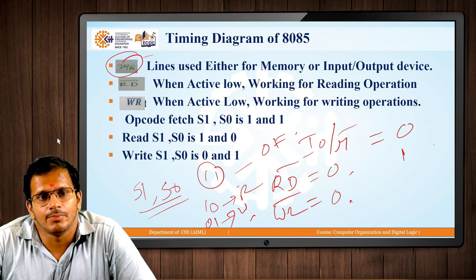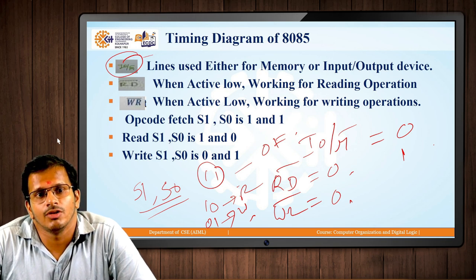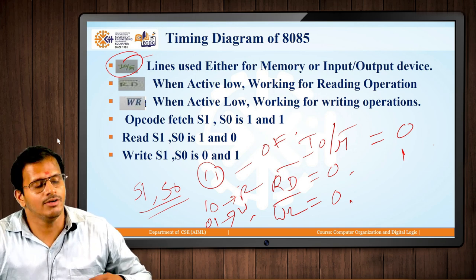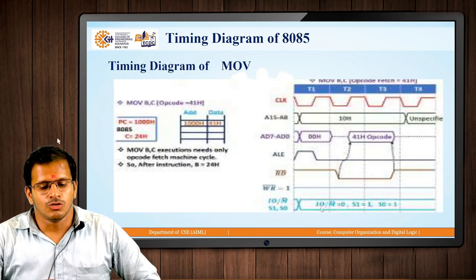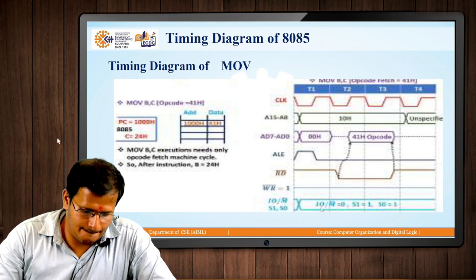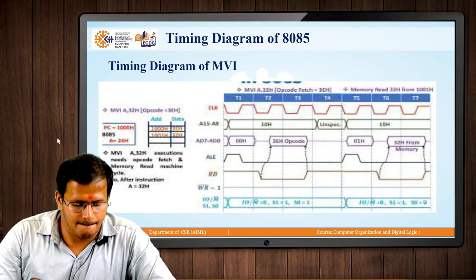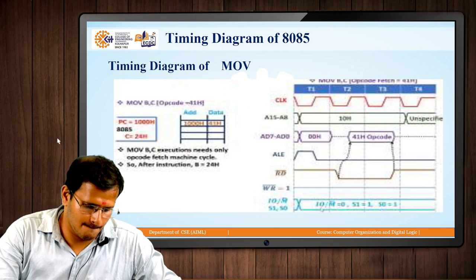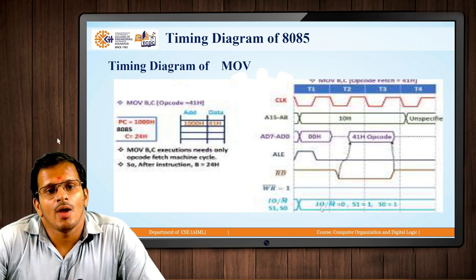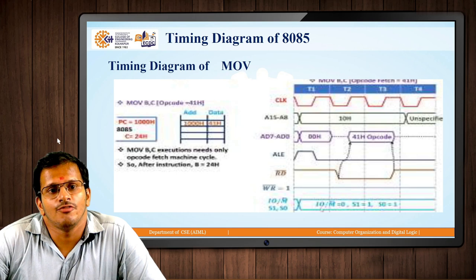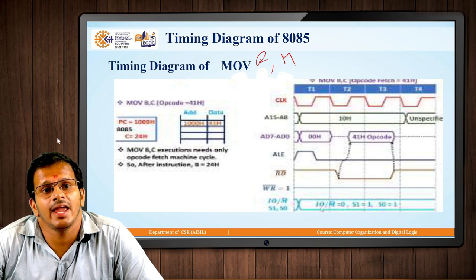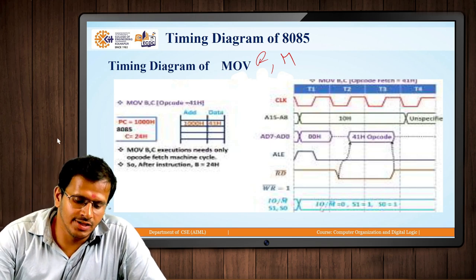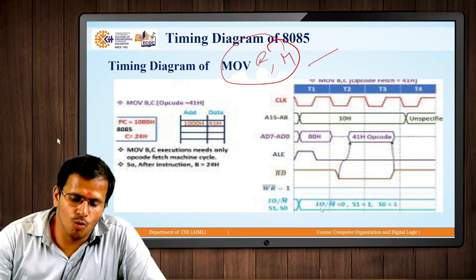Now we will look at the MOV instruction as an example, understanding the operation performed by MOV. When we use the MOV instruction, we are working with a register or memory location value — there is no 8-bit immediate value to write. So this instruction requires only opcode fetching.